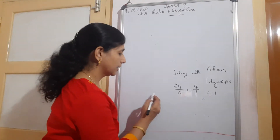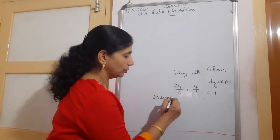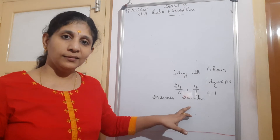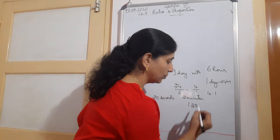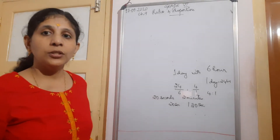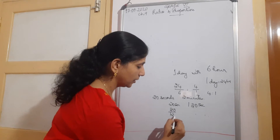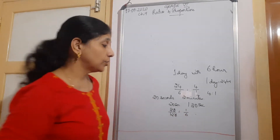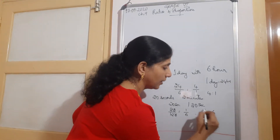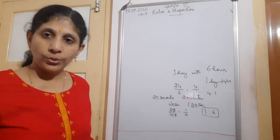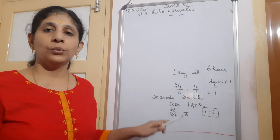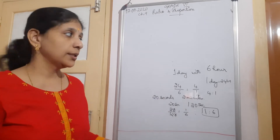Now if it is 20 seconds to 2 minutes, how will you find the ratio? In 1 minute there are 60 seconds, so 2 minutes is 60 into 2, that is 120 seconds. So 20 upon 120 - the zeros cancel, it is 1 by 6. So the ratio between 20 seconds and 2 minutes is 1 ratio 6. You have to first convert to the same unit, then compare. Ratio is nothing but comparison - it is a fraction and it doesn't have any unit.